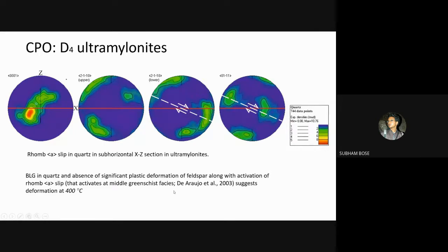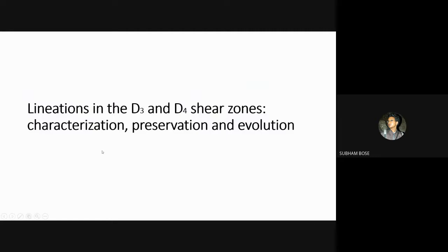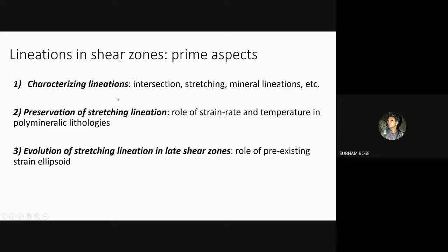While evaluating the structural evolution of the area, special emphasis was laid on the lineations in the D3 and D4 shear zones, based on three primary aspects: first, characterization of lineations — identifying and distinguishing intersection and stretching mineral lineations commonly observed in a shear zone; second, preservation of stretching lineation — the factors controlling preservation on the mylonitic foliation surface; and third, the evolution of stretching lineation in late shear zones.